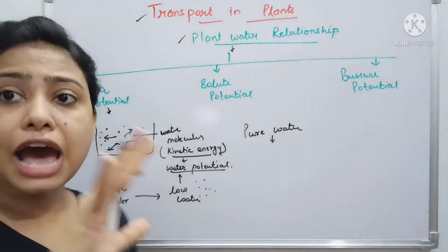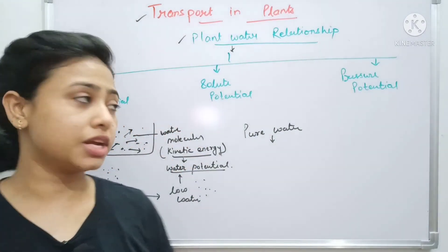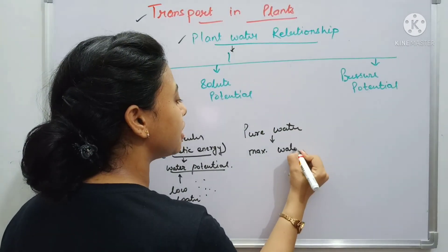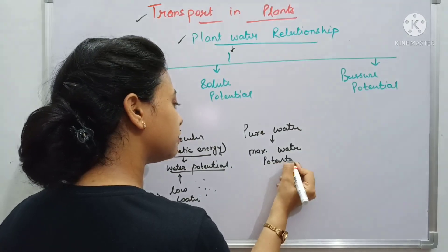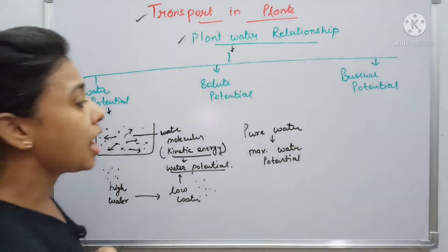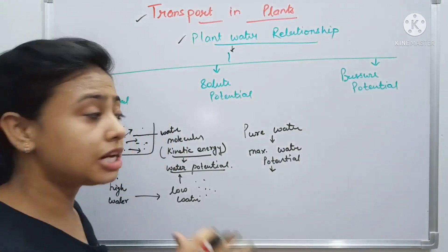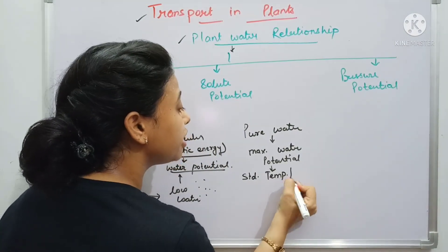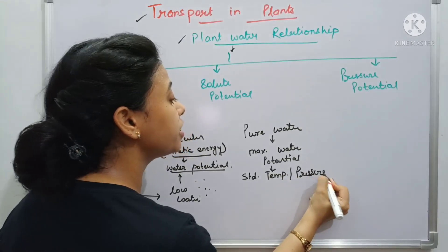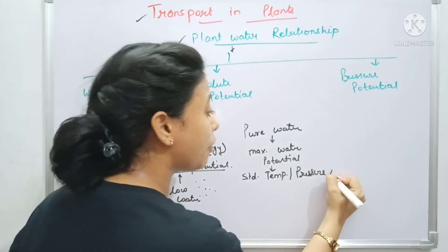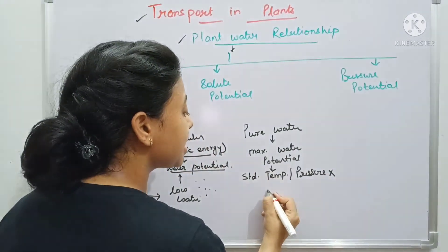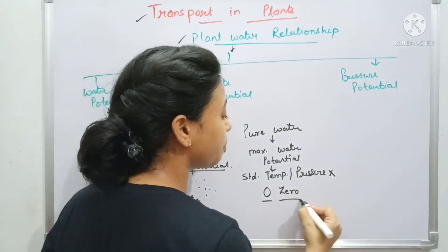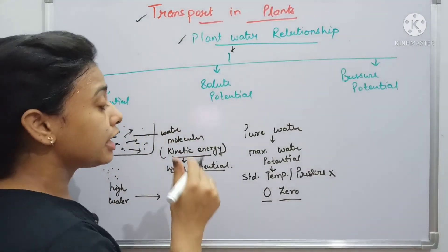If we take pure water — water with no impurity or solute — it has the maximum water potential. At standard temperature and with no external pressure, this water potential is taken as zero. This is the standard reference value for water potential.